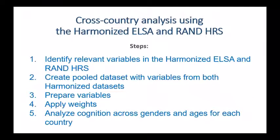Here are the steps. First, we want to identify relevant variables in the harmonized ELSA and the RAND HRS. We're going to create a pooled or stacked dataset with variables and observations from both harmonized datasets. We'll prepare a few variables, apply weights, and analyze cognition across genders and ages for each country. I'm conducting this webinar in Stata today. I've also provided the program we'll use as a handout — there's a handout called advancedELSAwebinar.do. If you remove the last C on the file extension, you can follow along.